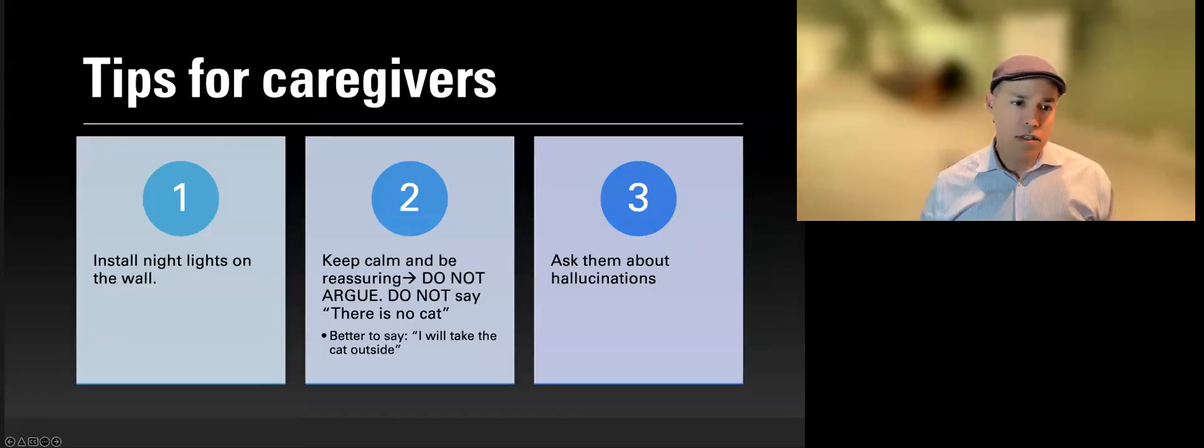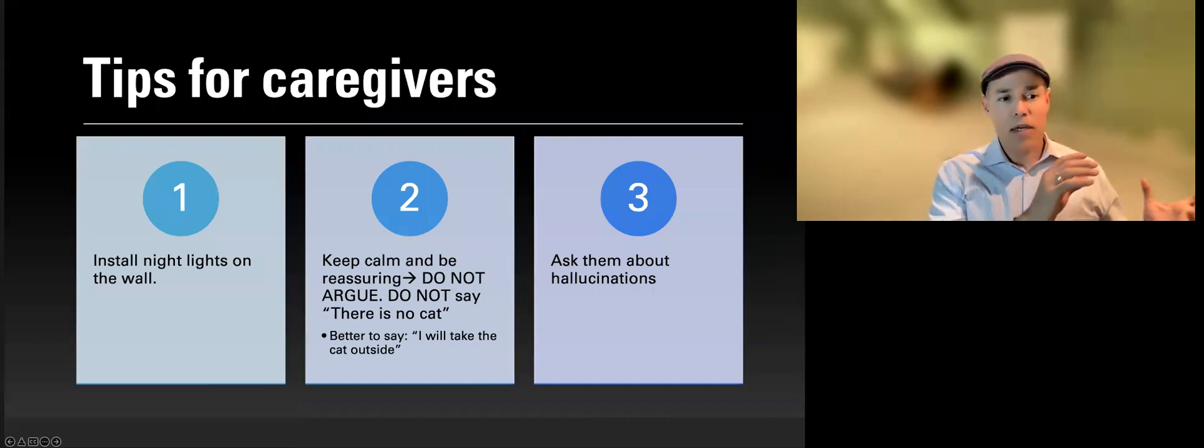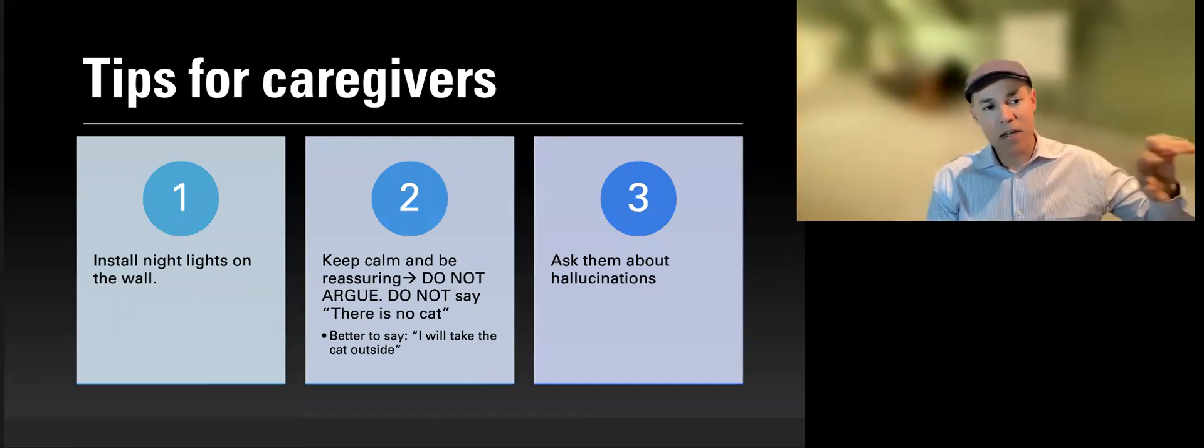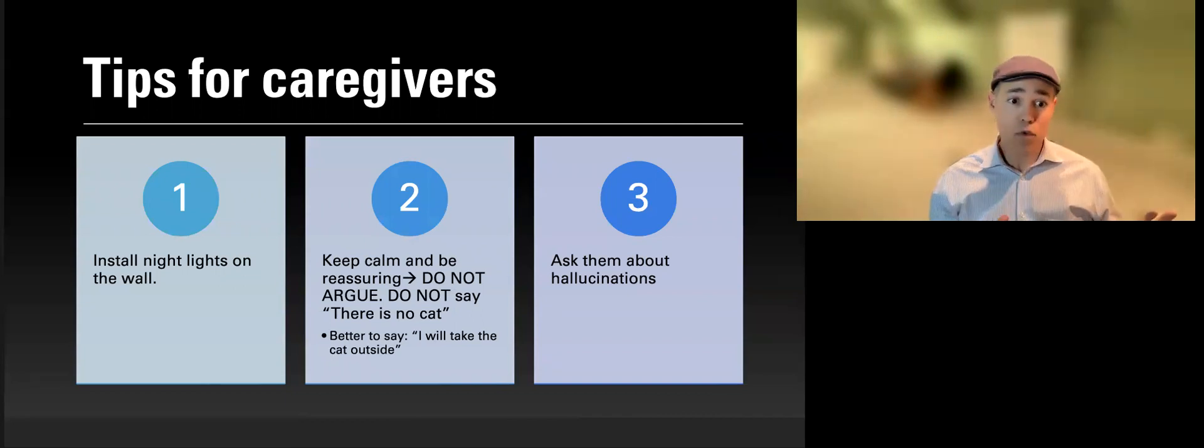These are our tips for caregivers. Number one: you can actually put some night lights on the wall. That might help for some patients. Always stay calm and be reassuring. Calm down. Do not fight. Do not argue with the patient. Do not say there is no cats. It's better to say I will take the cat outside. There is no point to fight.